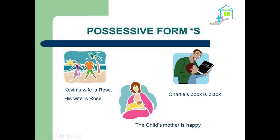Here we have the possessive form — apostrophe S. When I'm talking about something or someone who has a relation with or belongs to someone else, I use apostrophe S. For example: Kevin's wife is Rose — the wife of Kevin, so apostrophe S reflects the relationship. Charlie's book is black — this book belongs to Charlie. The child's mother is happy — who is happy? The mother.